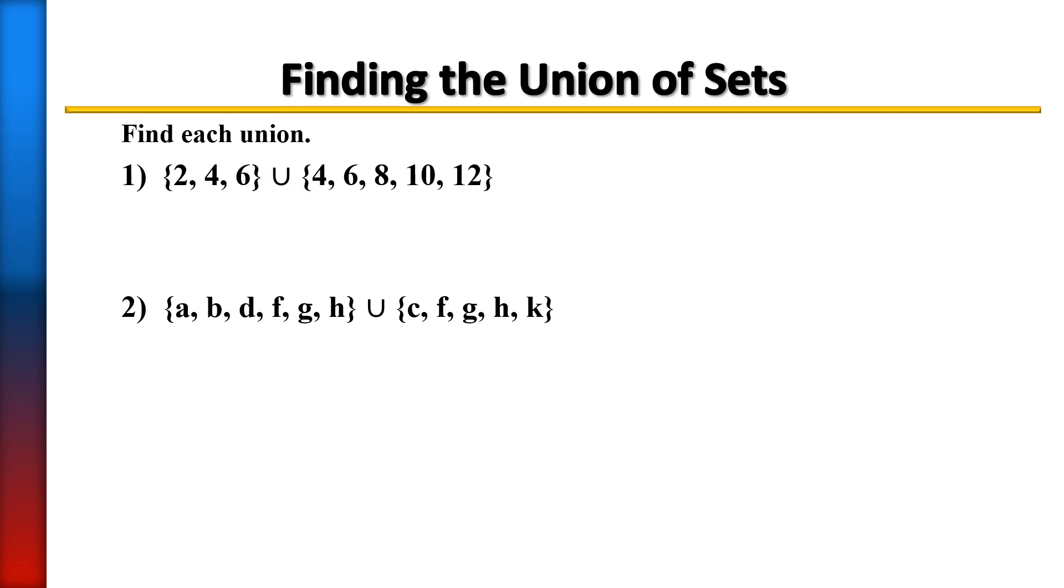So the union of these two sets means to bring these two sets together and put all members in one set. So think of members as like people. So who's gonna be in this set? Everybody's coming to the party from set A and from set B.